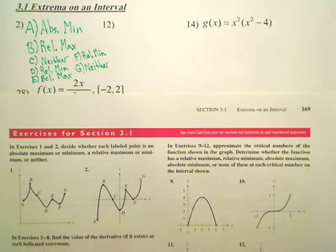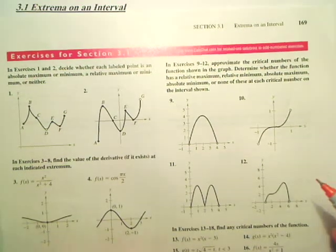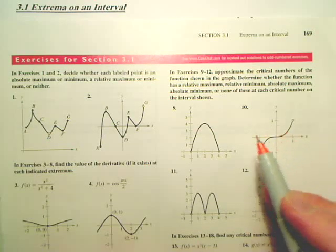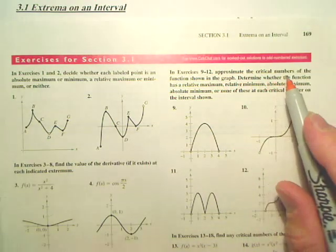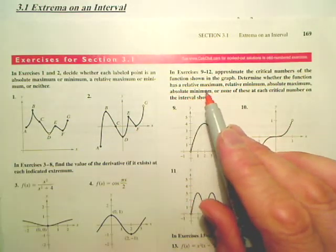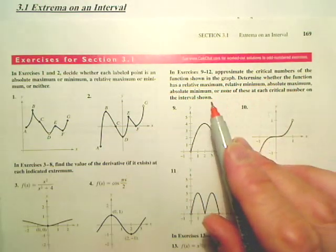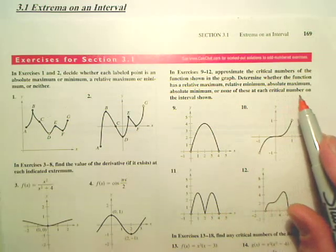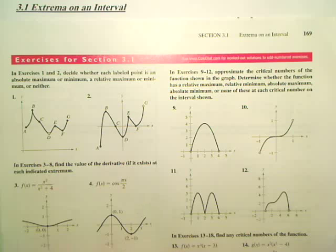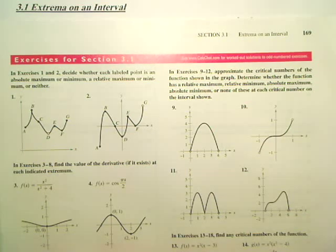Number 12. Number 12 looks like this right here. On number 12, it says, approximate the critical numbers. Determine whether the function has a relative max or min, absolute max or min, or none at each critical number on the interval shown. So basically, we find critical numbers and see what they are. Are they absolutes, relatives, what are they, defining the critical numbers.